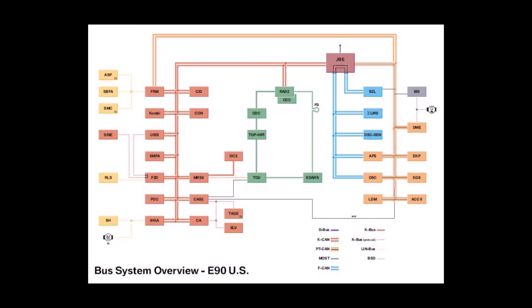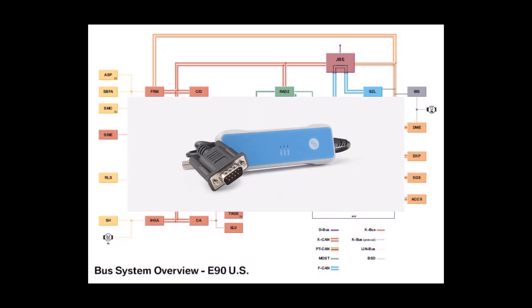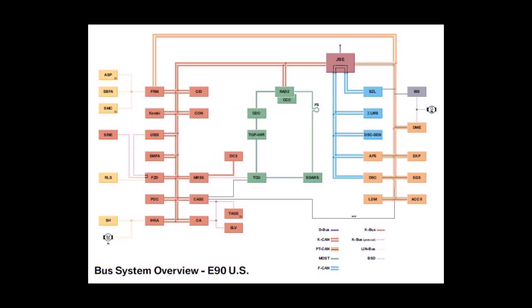This setup is sitting on the K-CAN — the slow-speed body bus — because that's where the airbag unit is connected. I've learned a bit more since recording this video, which I'll cover in a further video later.